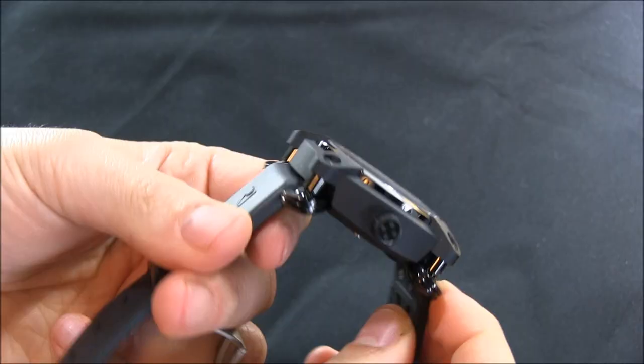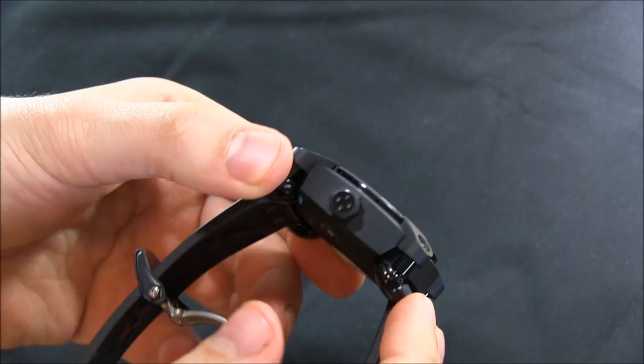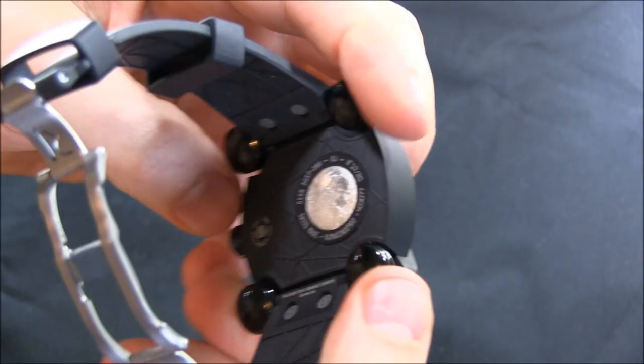The detailing is very interesting. You have this combination of sandblasted matte texture in black with these PVD polished elements. The case is steel, I think 46 millimeters wide. So it's quite a large watch, but it has to be. For a watch like this, it has to be very interesting.